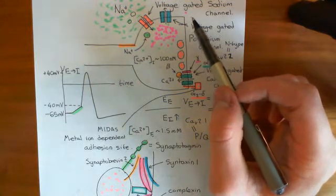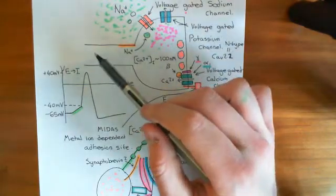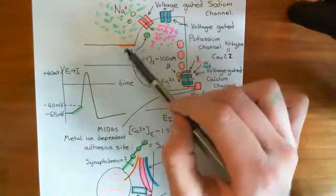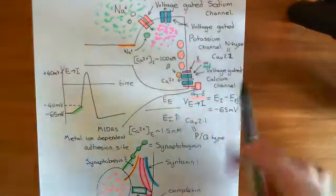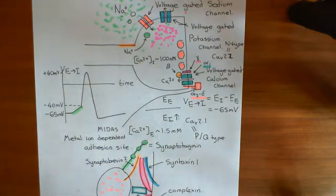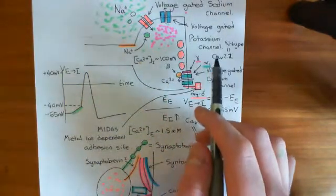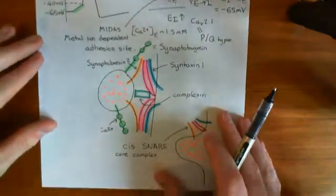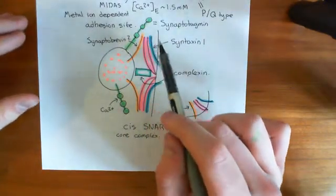Welcome to this next video in which we're discussing release of neurotransmitter. So far, what we have seen is that an action potential propagating along an axon will reach the axon terminal, and there it will cause the opening of N and PQ type voltage-gated calcium channels. These channels will open and allow calcium to enter the axon terminal from the extracellular fluid. This calcium is then going to bind to and activate synaptotagmin.